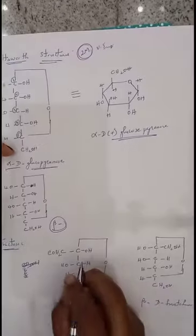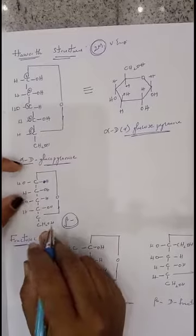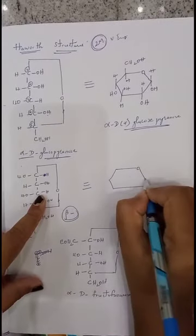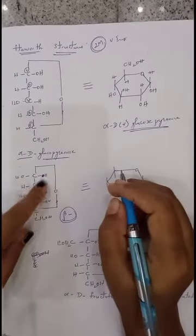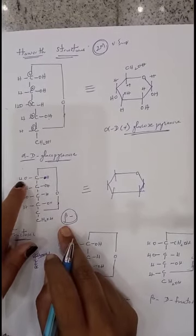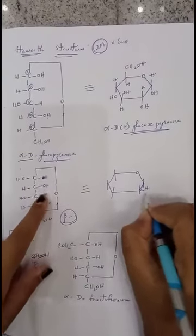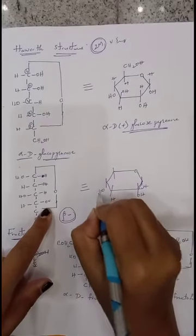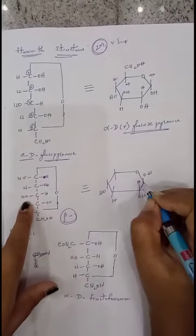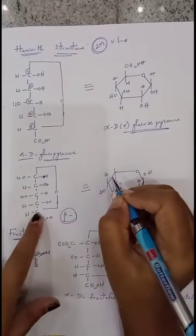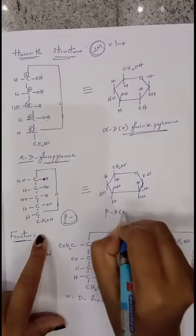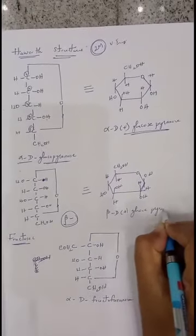This structure is very important for two marks. In the same manner we can also write the Haworth structure for beta-D-glucopyranose. Same six-membered heterocyclic ring is drawn. For beta, at the first carbon atom OH is present on the left side. Right side groups are written below the plane: H, OH, H, OH. Left side groups are written above the plane: OH, H, OH, H. At the fifth carbon atom CH₂OH is written above the plane and H below the plane. This is the Haworth structure of beta-D-glucopyranose.